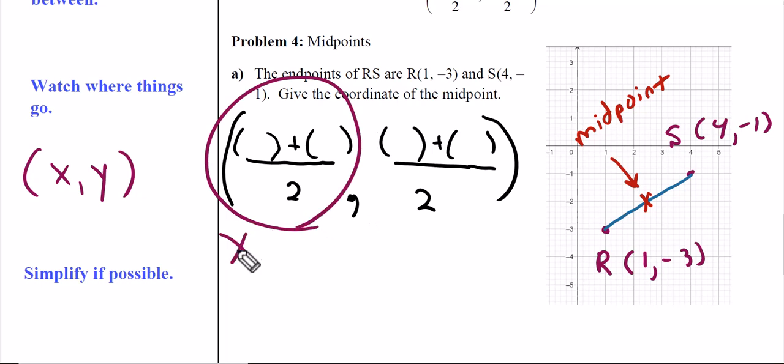This represents the x's and this represents the y's. If I plug in the x values, I have x₁ which is 1 and x₂ which is 4. The y values go in the y coordinate: -3 and -1.